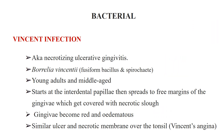Bacterial infections — the most important is Vincent infection, also known as acute necrotizing ulcerative gingivitis, similar to Vincent's angina which produces a patch or ulcer on the tonsil. The causative organism is a fusiform bacillus — the spirochete Borrelia vincentii. The disease more often affects young adults and middle-aged persons. It starts at the interdental papillae and spreads to the free margins of the gingiva, which become covered with necrotic slough. The gingiva also becomes red and edematous. A similar ulcer and necrotic membrane may also form over the tonsil, known as Vincent's angina.